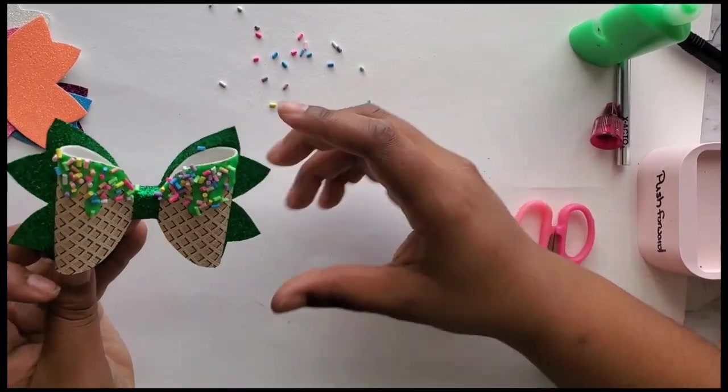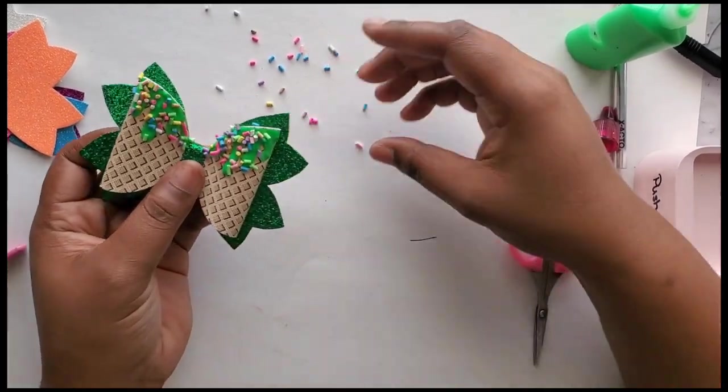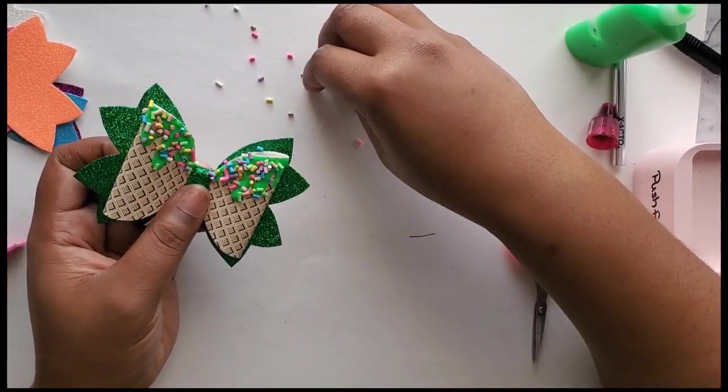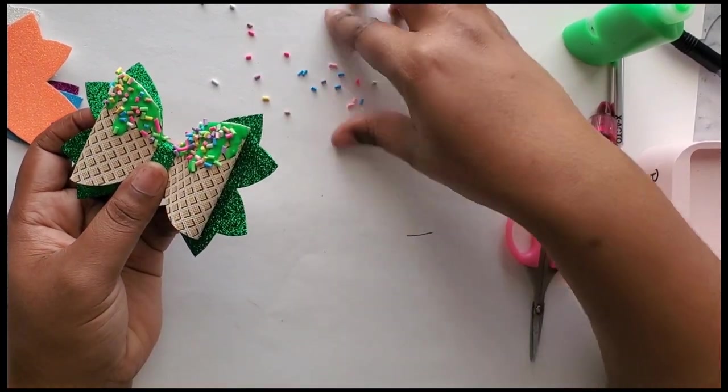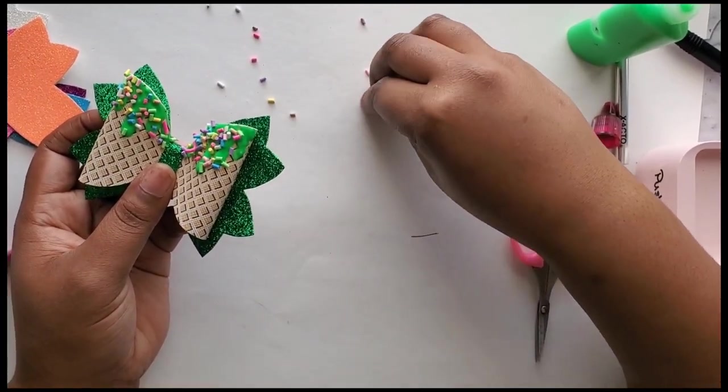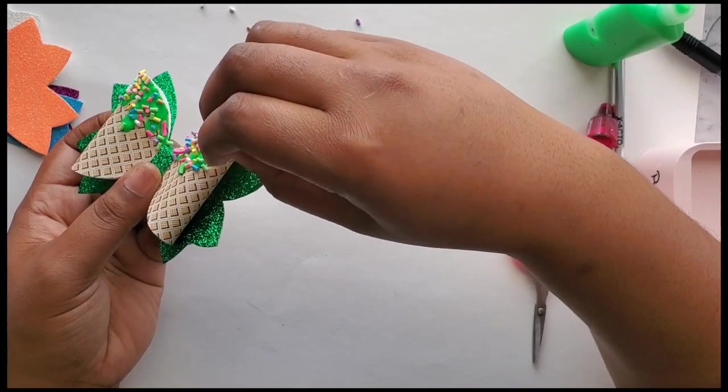I did add more. I wanted it to be full of sprinkles. I wanted it covered in sprinkles. I still wanted the green to show, or whatever color I was doing for each bow. I still wanted the color to show, but I wanted it covered in the sprinkles.